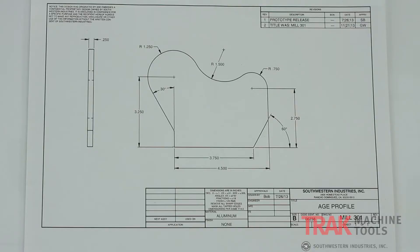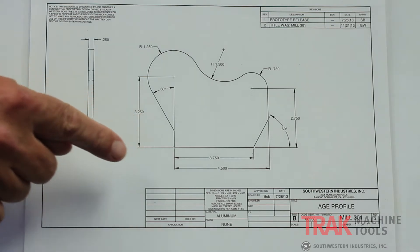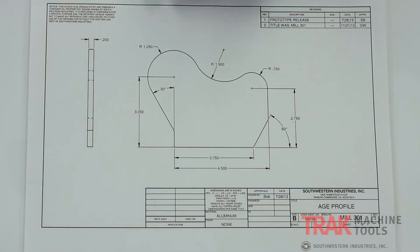The next thing I'm going to do is show you how to do a little more difficult geometry. Most of the time a print should not be missing this many dimensions, but to show you how the control can work, this next print is going to be pretty helpful. I'm going to show you how to do more high-end AGE programming. If you look at the print, you'll notice that a lot of dimensions are missing. Normally, if I was a machinist and got a print like this, I'd send it back and ask for all the missing parts. However, to prove how powerful the AGE is, I'm going to show you how to program this part anyway.